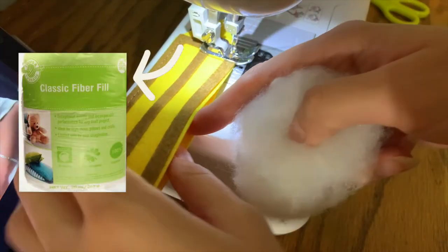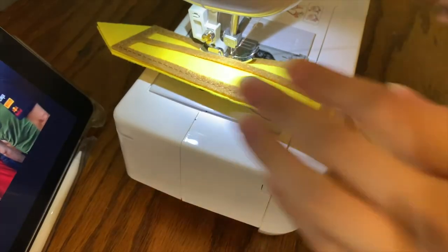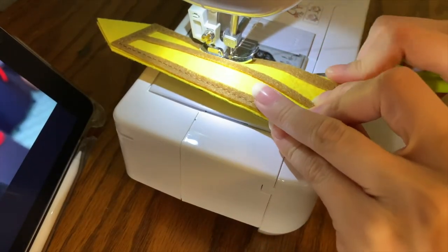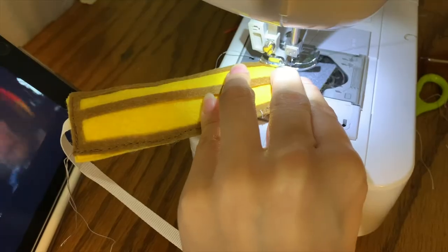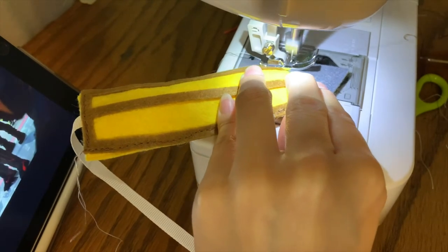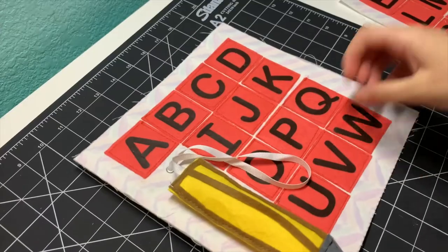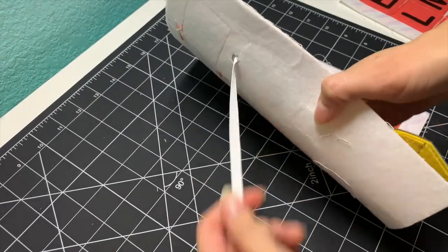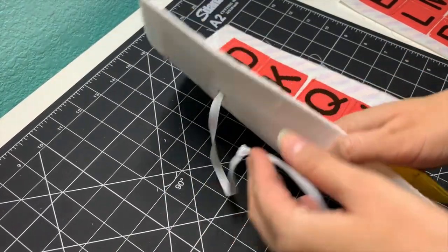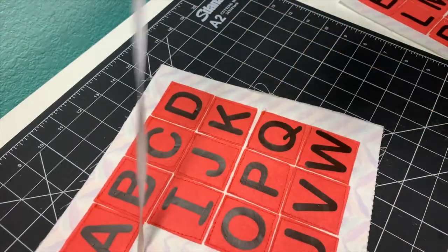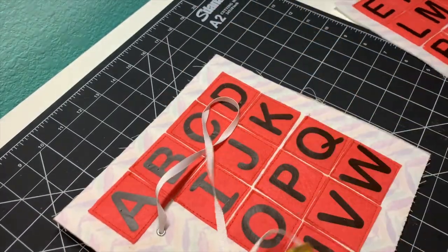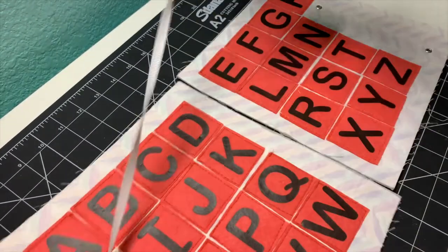I stuffed the pencil with some filling that I got at Walmart and using some scissors, I made sure to evenly distribute the stuffing into the pencil. After sewing the pencil, I just inserted the ribbon into the eyelet and created a knot just to secure the ribbon into place.